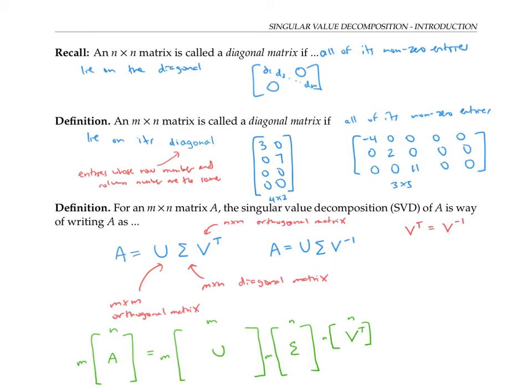But the singular value decomposition is different from a diagonalization in that U and V may be different matrices. In fact, if m and n are different numbers, if we have a purely rectangular matrix, then U and V have to be different matrices because they've got different dimensions. But SVD has a lot of the same power as diagonalization does - the power of writing a matrix in terms of a much simpler diagonal matrix.